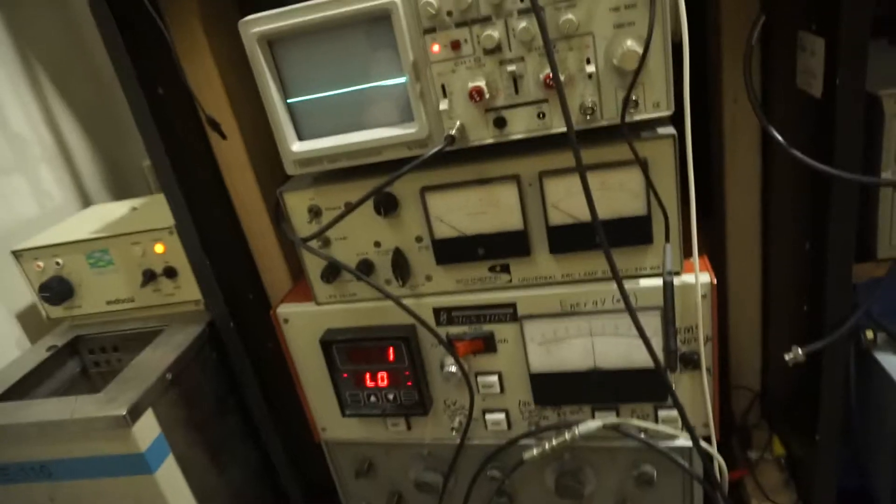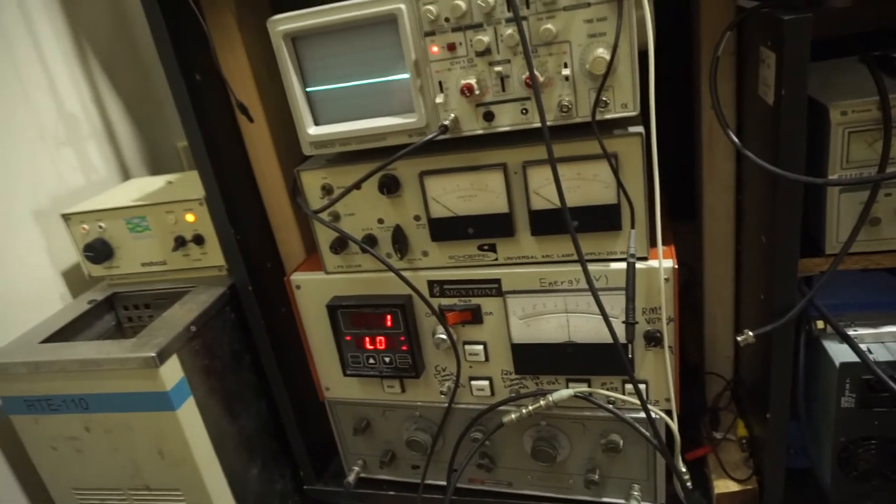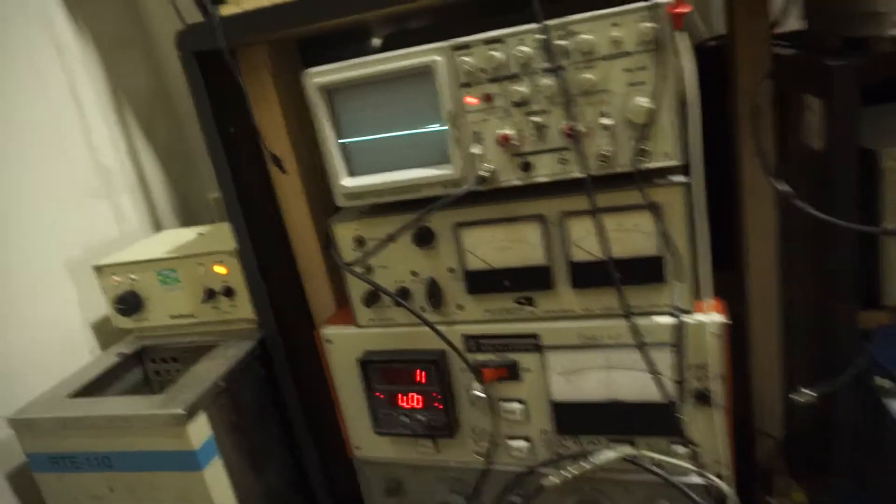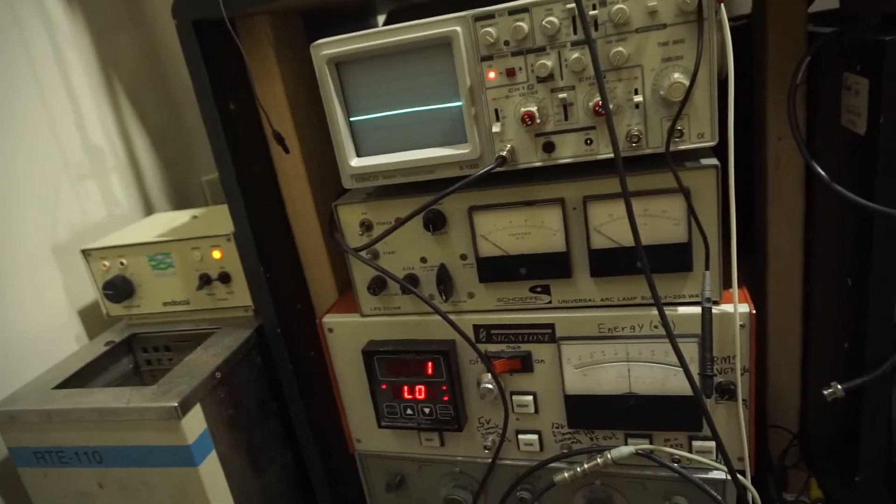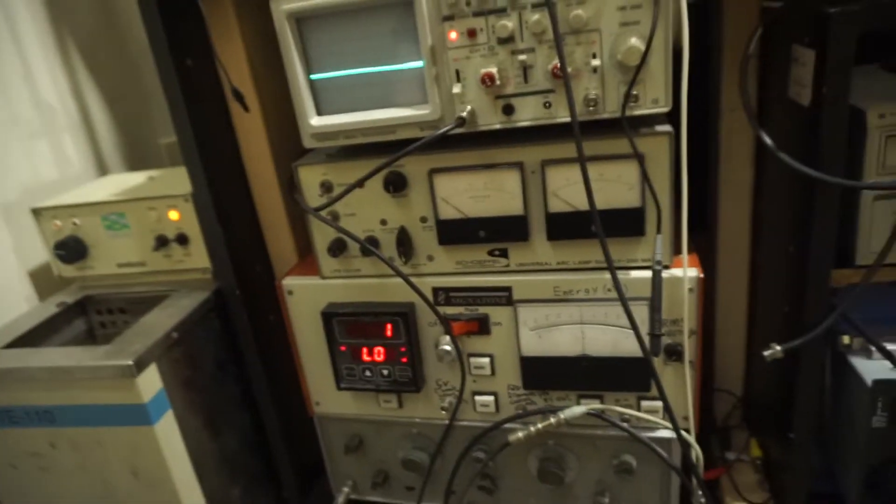And down here we have several power supplies that are essentially just for regulating the amount of power flowing to the filament. So this is an accelerator power supply to pull the electrons off the filament, and this is a current regulator for the filament.